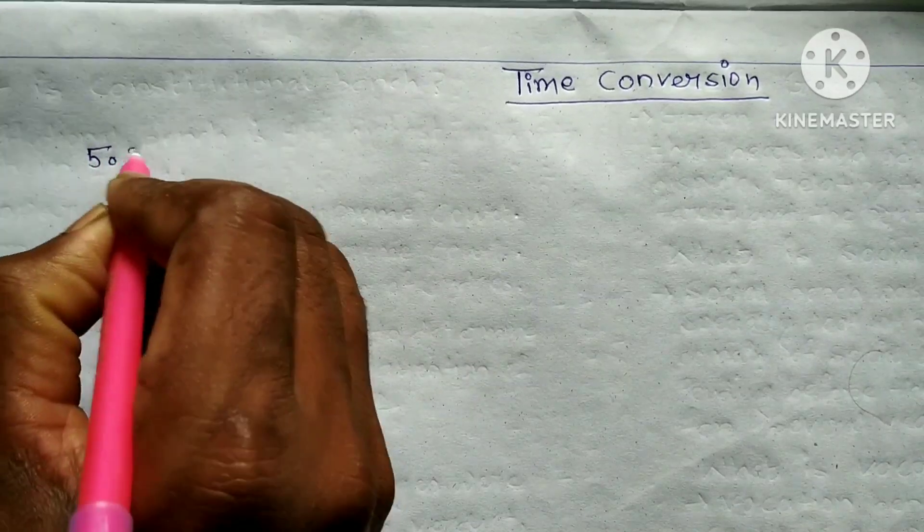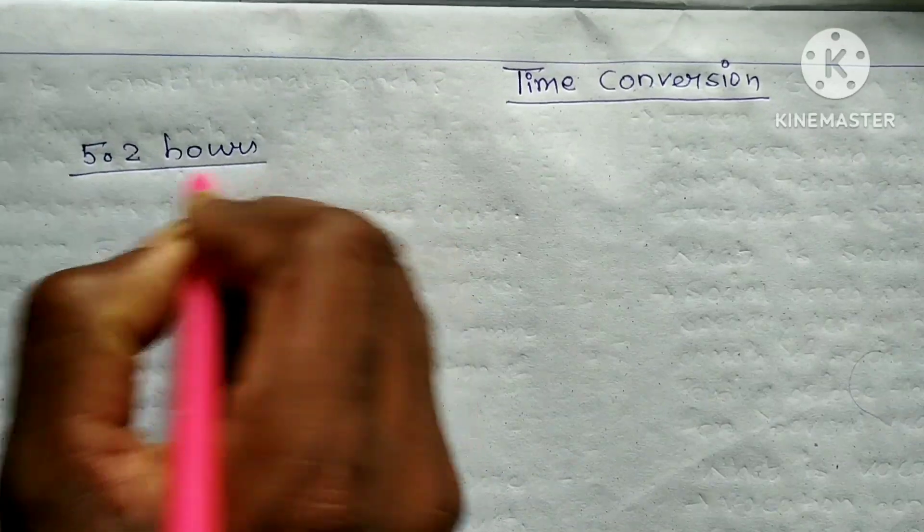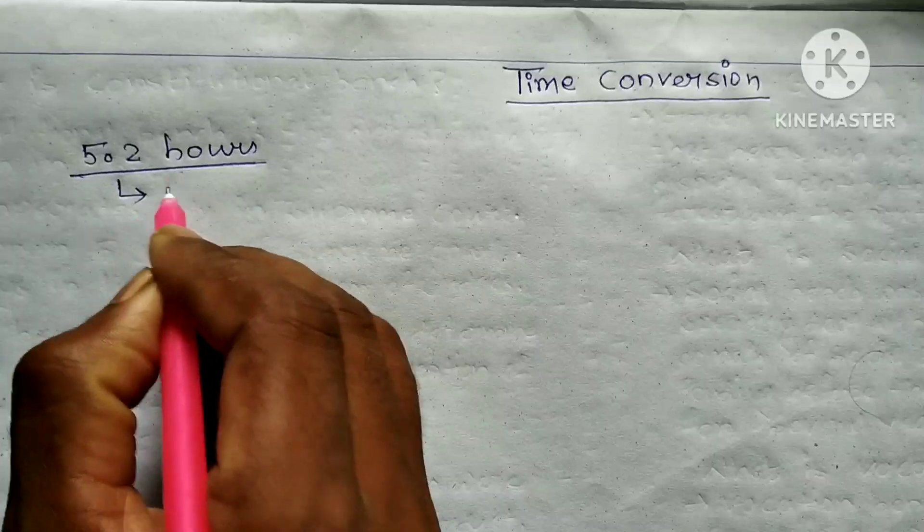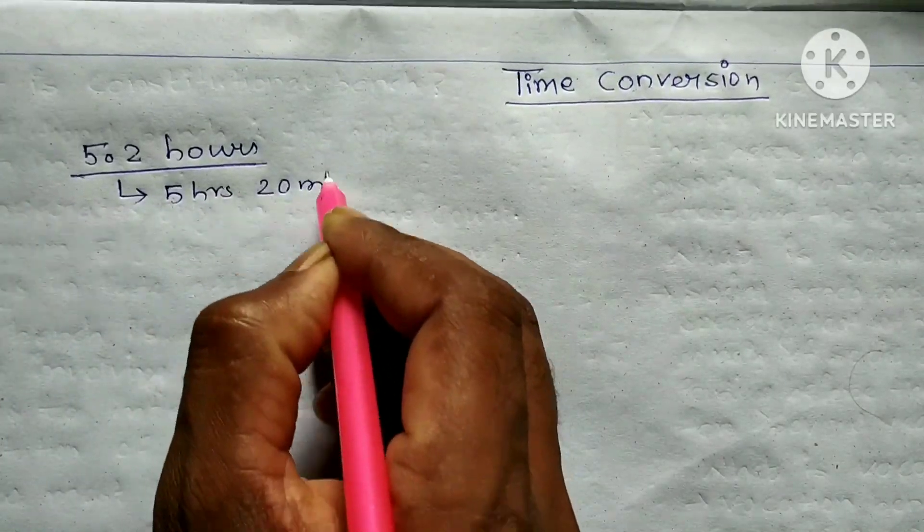5.2 hours. We are going to solve this question: 5.2 hours equals 5 hours, 20 minutes.